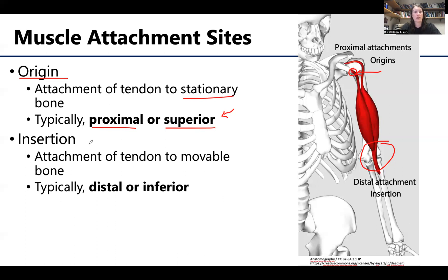Insertion is going to be the attachment of the tendon to the movable portion of the bone. In this example of the biceps brachii, its distal attachment is going to be on the radius — that tendon attaches on the radius. Sometimes you'll hear this referred to as the distal or inferior attachment. You certainly will still hear the terms origin and insertion used.